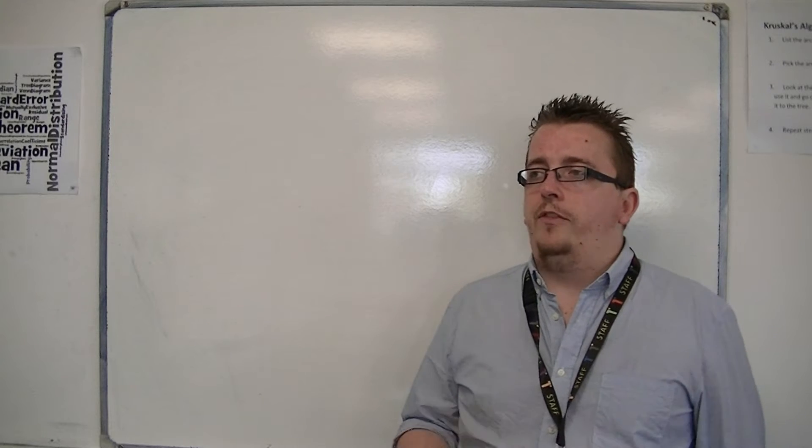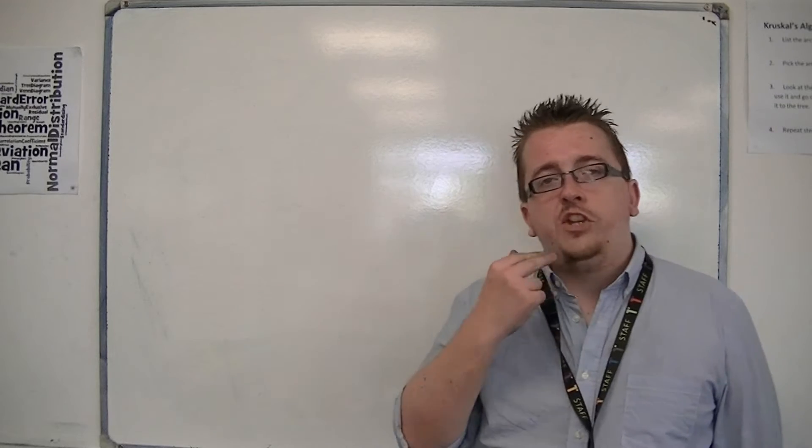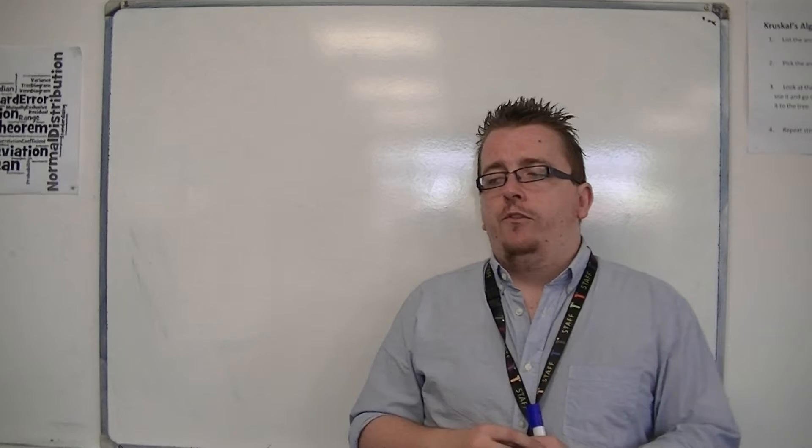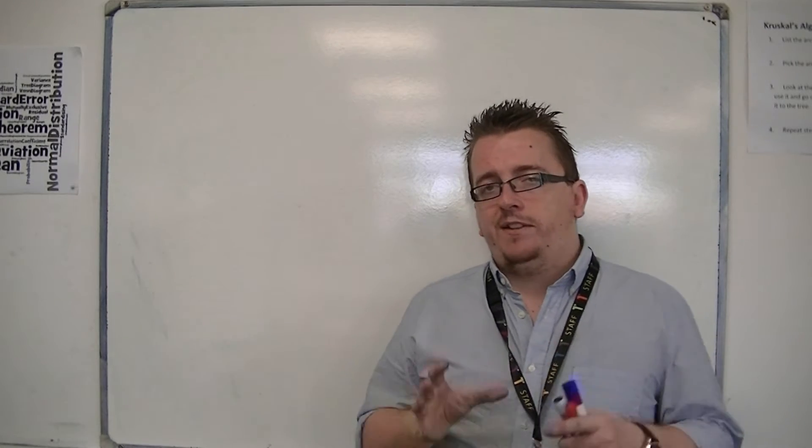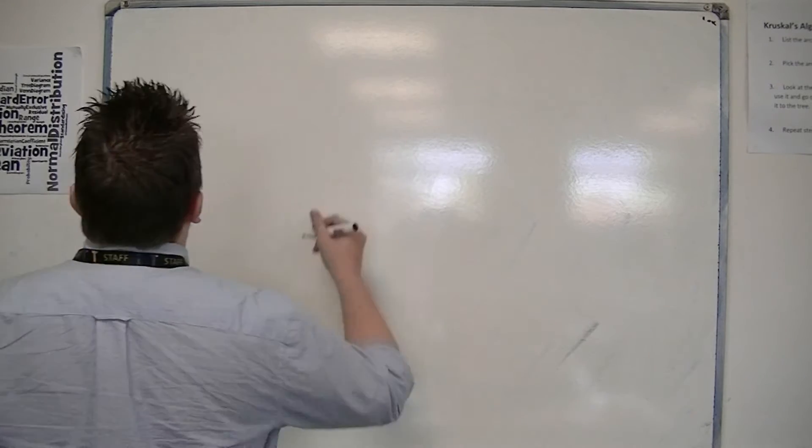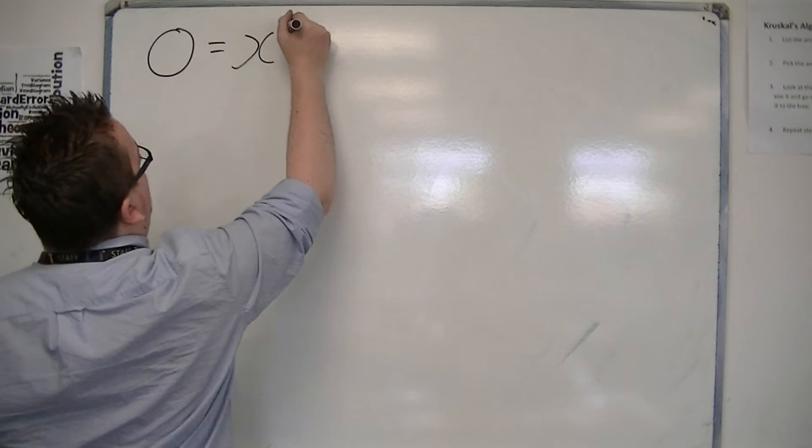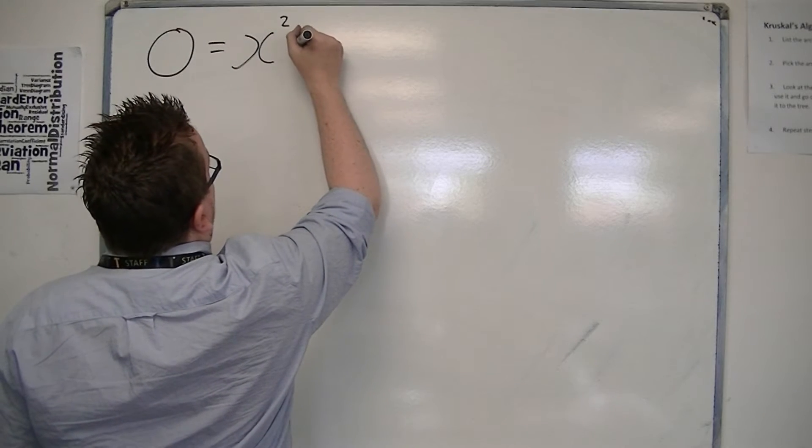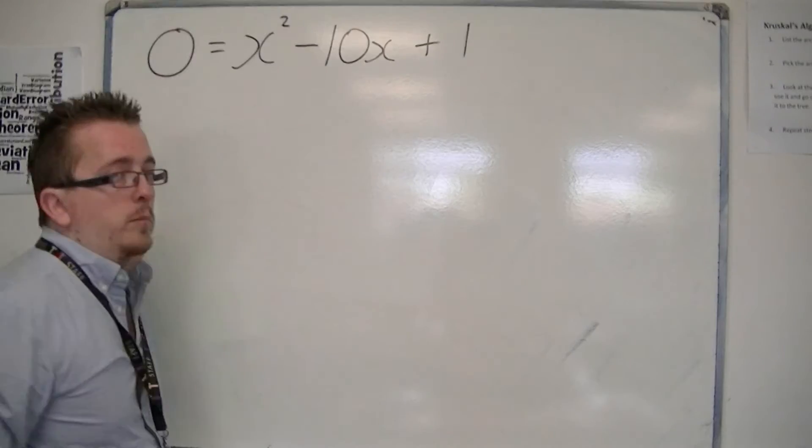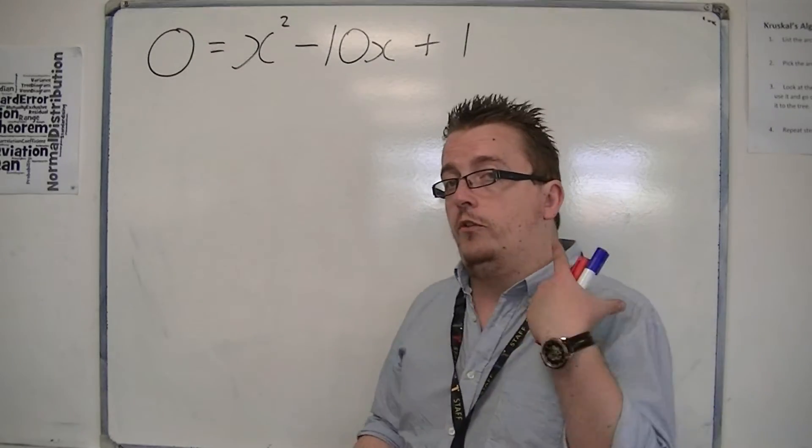So there must be other methods that will allow us to solve a quadratic, and there are. There's really two other methods, very similarly linked. The next way I'm going to look at is completing the square. Now we've already seen how we complete the square, but in solving an equation like 0 is equal to x squared minus 10x plus 1, for example, I'm going to use completing the square.